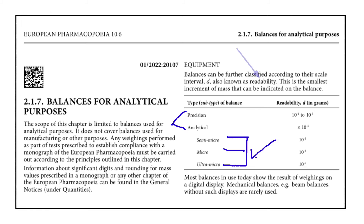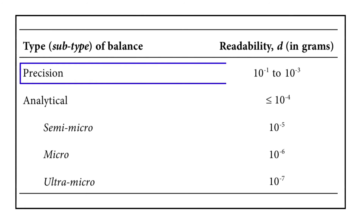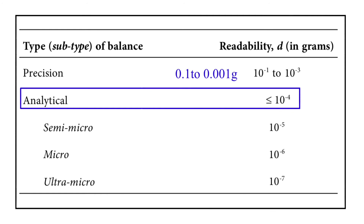Precision balance: if a balance has a readability from 10 raise to power minus 1 to 10 raise to power minus 3 gram, it is considered a precision balance. 10 raise to power minus 1 can be written as 0.1 gram, and 10 raise to power minus 3 can be written as 0.001 gram.